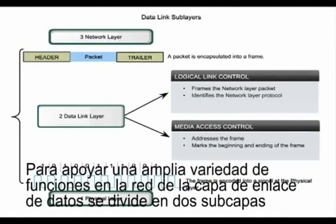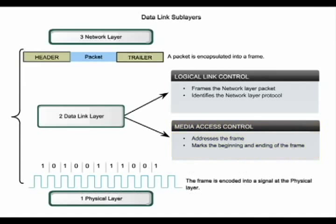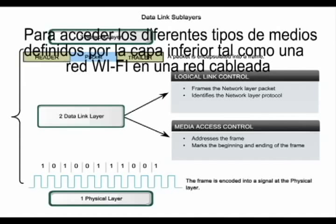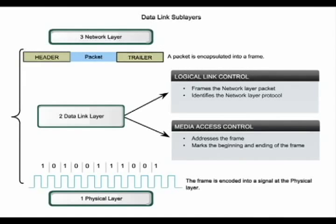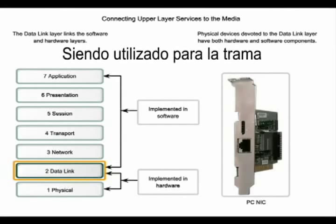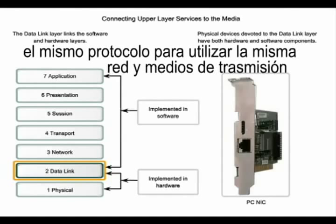To support a wide variety of network functions, the data link layer is divided into two sub-layers. The upper sub-layer is called the logical link control, and the lower sub-layer is called media access control. Separating the data link layer into sub-layers allows for one type of frame — for example, an Ethernet frame — to access different types of media defined by the lower layer, such as a Wi-Fi network and a wired network. The logical link control sub-layer places information in the frame that identifies which network layer protocol is being used, allowing multiple layer 3 protocols to utilize the same network interface and media.